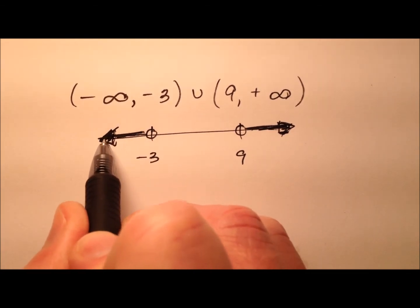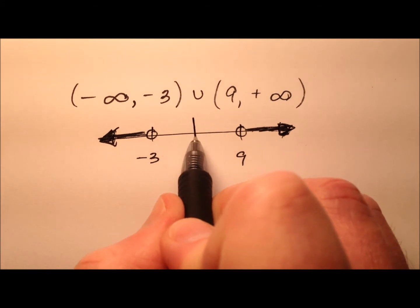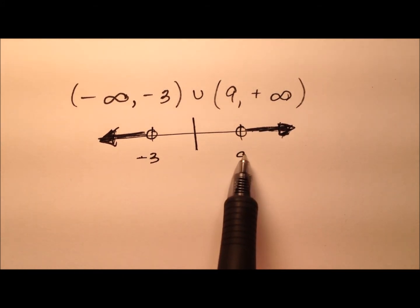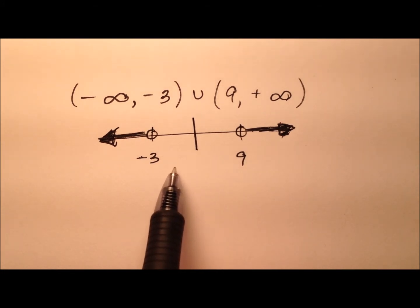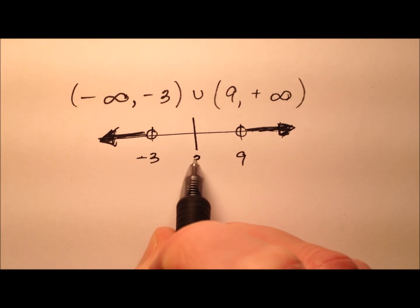Okay, well how can I write an absolute value inequality for this? Well first I need to know the number right in the middle, so between negative 3 and 9, it looks like if I were to take the average, it would be negative 3 plus 9 is 6, divided by 2 is 3.